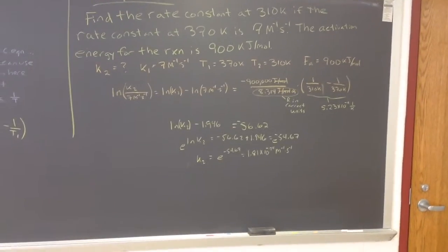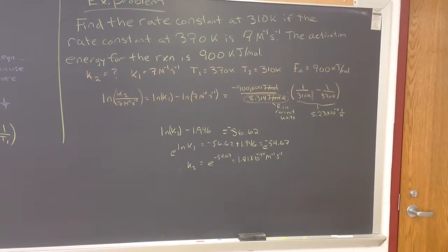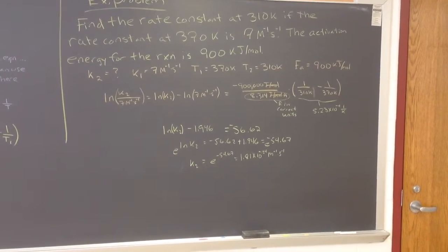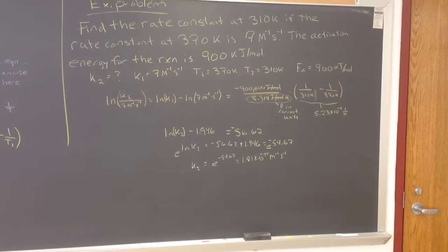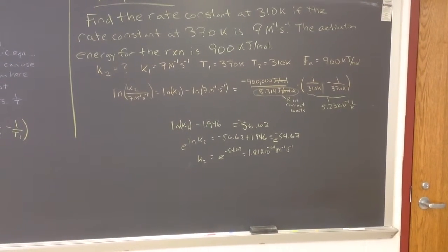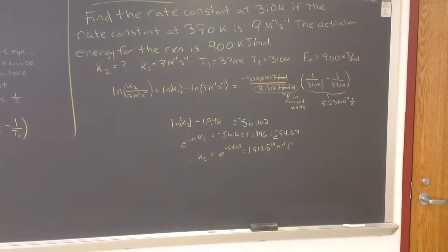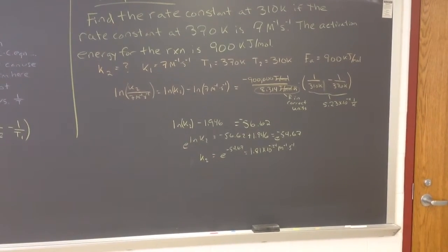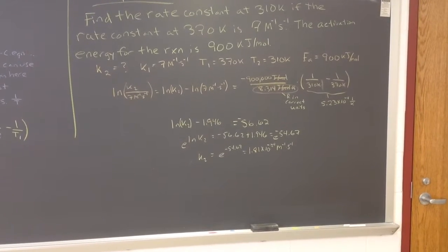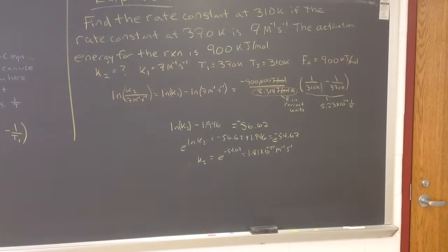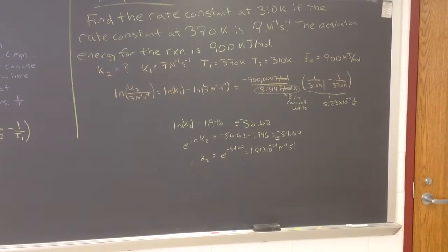So remember we started with, at 370 Kelvin, 7 molar per second, per molar per second. At 310 Kelvin, the rate is much, much, much smaller. Right? We're talking about 25 orders of magnitude smaller. Right? But that's a 60 degree temperature decrease.